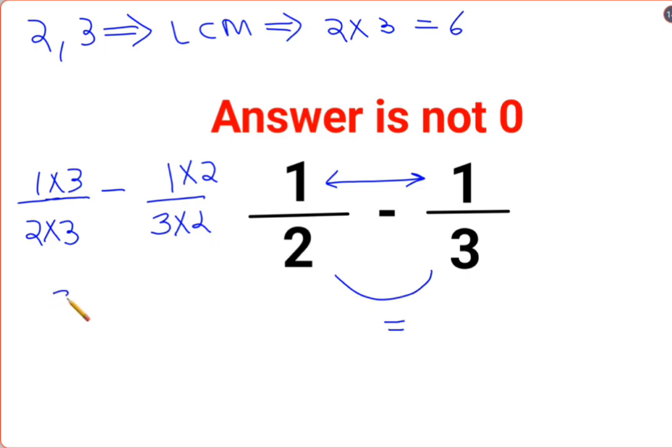So basically now I am getting 3 upon 6 minus 2 upon 6. Since the denominators are the same, I can directly subtract the numerators which finally gets you the answer as 1 upon 6.